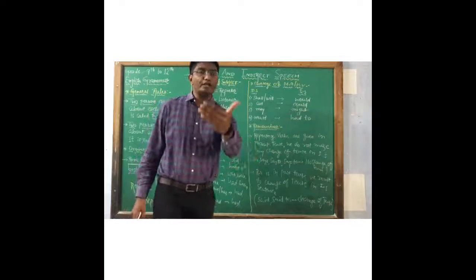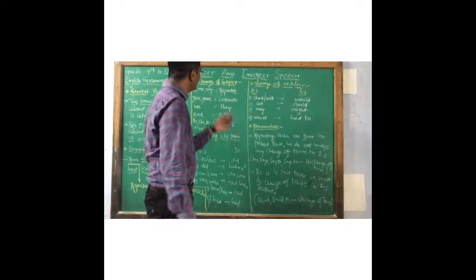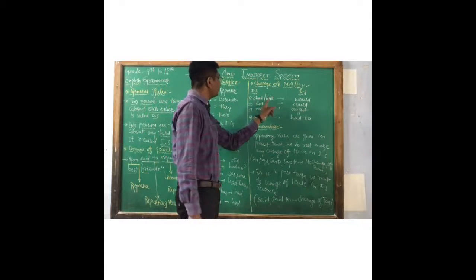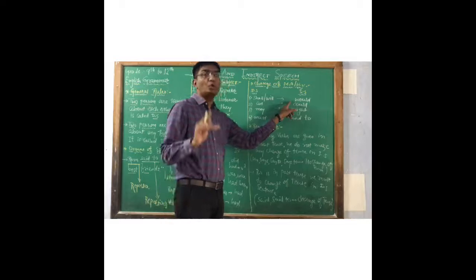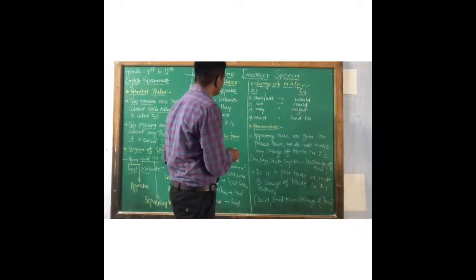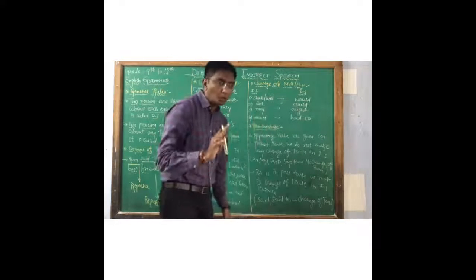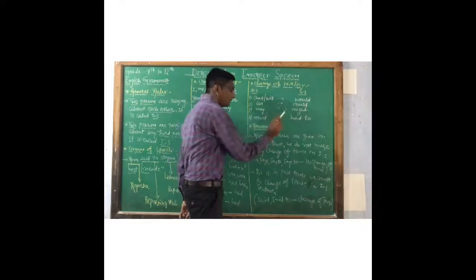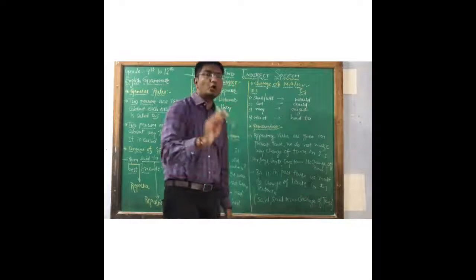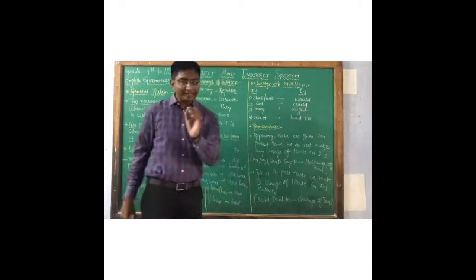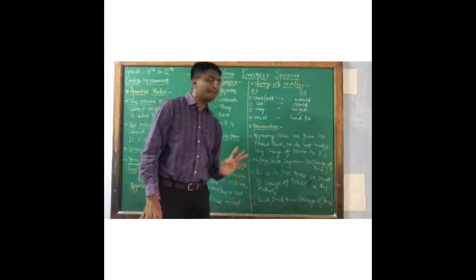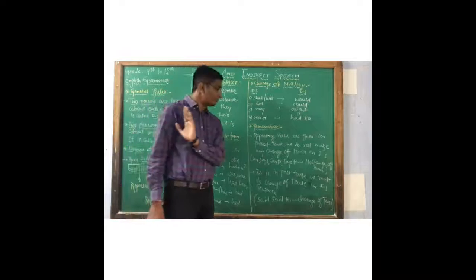Now the next changes are there. Change of modal auxiliaries or helping verb. How will modal auxiliaries or helping verbs change? So shall or will turns into would. Then can turns into could. May turns into might. And must turns into had to. So that thing you have to keep in mind. And these changes also you will get when reporting verb is in past tense.